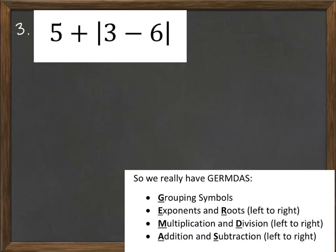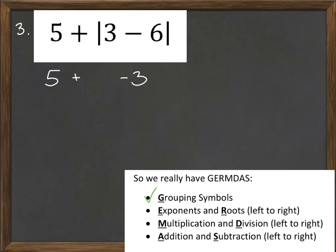Let's try the next problem: five plus the absolute value of three minus six. First we look for grouping symbols. Remember, absolute value signs are grouping symbols — they also take precedence. We're going to have five plus the absolute value of something, and that something is three minus six, which equals negative three. What is the absolute value of negative three? By definition, absolute value is always positive, so it's positive three. We don't see any exponents, roots, multiplication, or division. We just have five plus three, which equals eight.